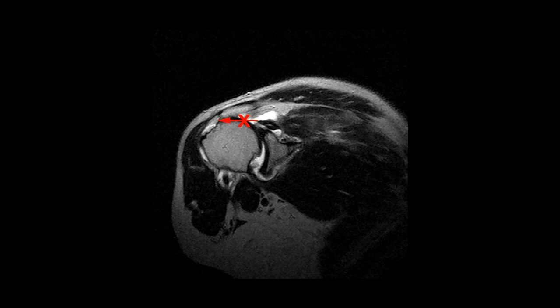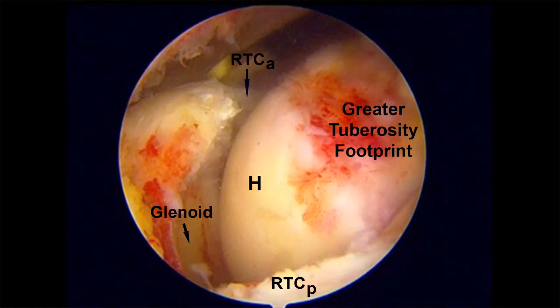This is not tissue that will be affixed to the bony footprint. Here is the exposed greater tuberosity footprint and the associated anatomy is depicted. In this case, the most medial aspect of the tear extends medial to the glenoid and is considered the pivot point.